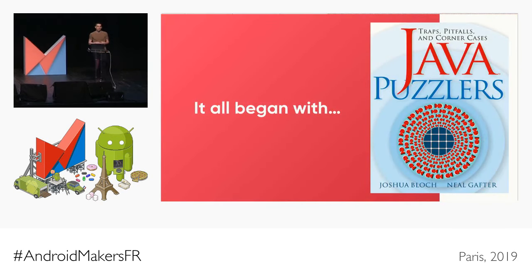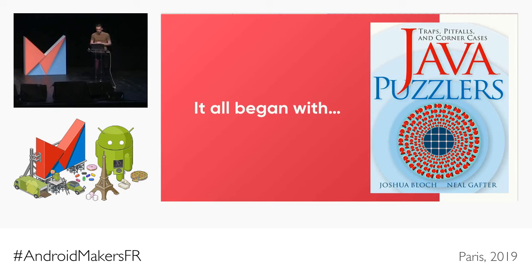Puzzlers are not something I've created — it's something pretty common. As far as I know, it was introduced by two people called Joshua Bloch and Neil Gafter in their book called Java Puzzlers. In this book, you have some sample Java code, you expect one output, and when you execute it you get a different output. That's basically what we'll be doing in this talk. They also did a bunch of Google I/O conferences. More recently I've seen the same kind of talks for Python, Ruby, and Kotlin. So I thought, why not for Android? Because Android is pretty large too.